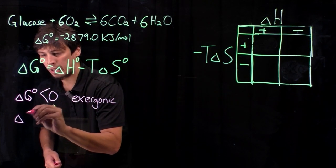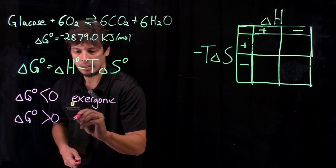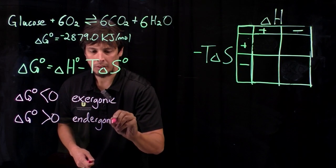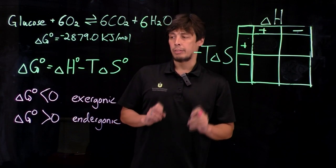Whereas if delta G is greater than zero, this is endergonic. And remember that exergonic reactions are spontaneous or product favored.